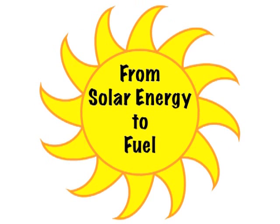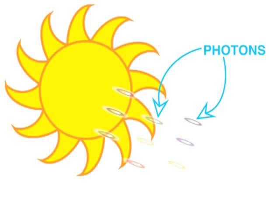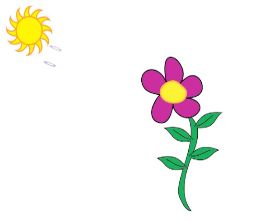From solar energy to fuel. Energy travels from the sun as particles of light called photons. Photons are packets or envelopes of energy. Plants and some other small organisms such as plankton use energy from photons as part of the process of photosynthesis.